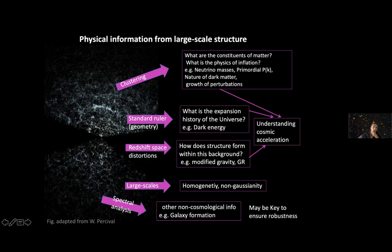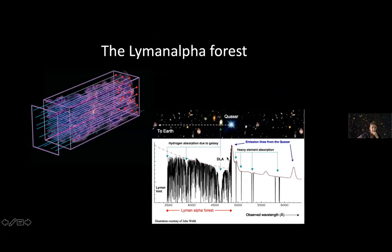On larger scales, there is information about homogeneity and non-Gaussianity, something about the mechanisms that generate the primordial perturbations. For each of these dots, there's a wealth of information in the form of a spectrum of the galaxy. This gives non-cosmological information about galaxy formation. One can also extract information from the Lyman-alpha forest from the spectra or from quasar spectra.